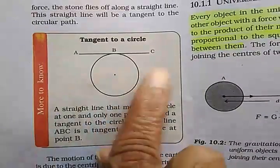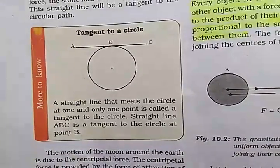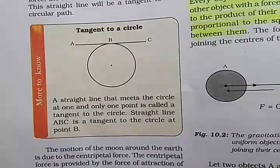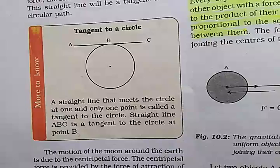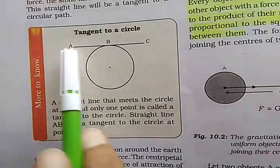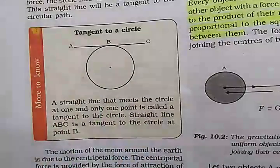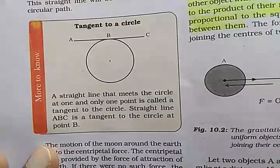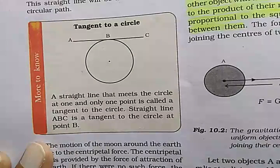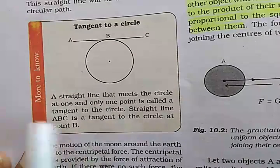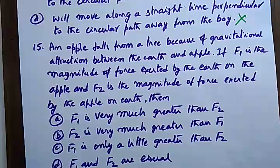Now we will study what a tangent is, as given in the textbook under the heading 'More to Know.' A straight line that meets a circle at one and only one point is called a tangent. The straight line AC is tangent to the circle at point B. Please remember this definition of a tangent.